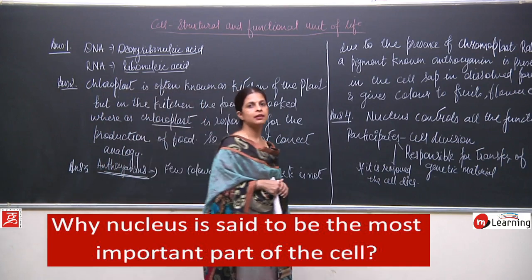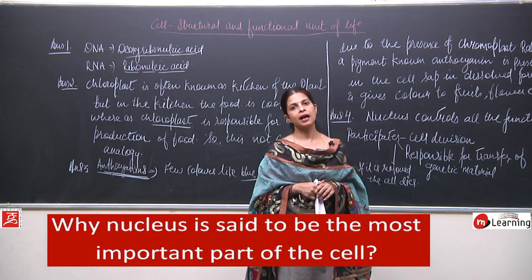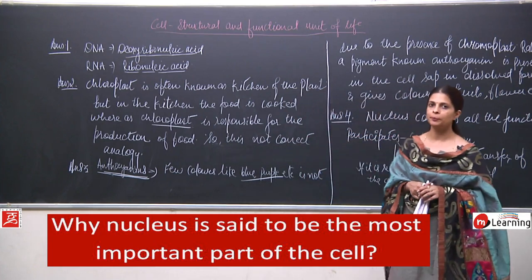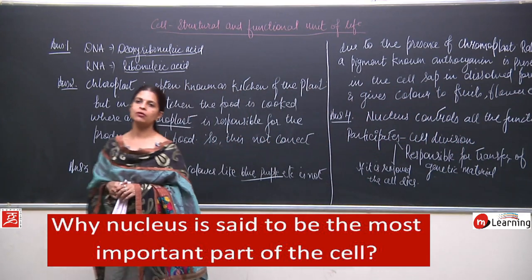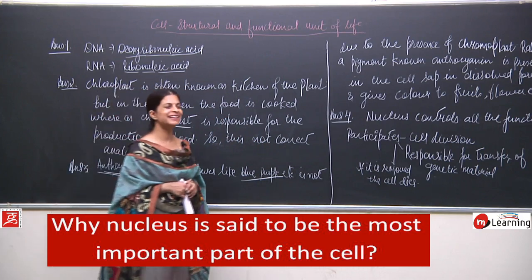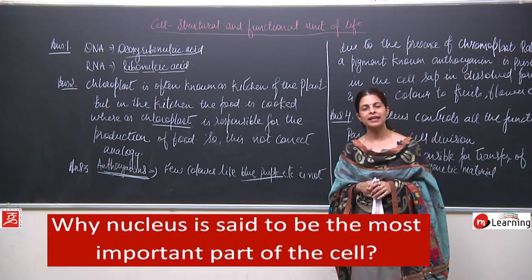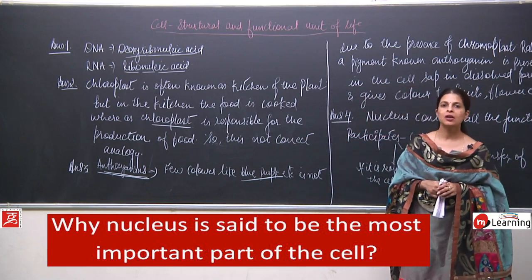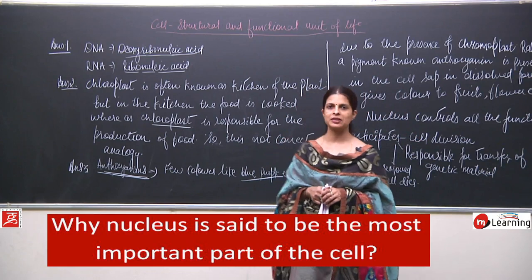When we talk about the longest cell, it is the nerve cell — the neuron. The axon can be very long, so neurons come in the category of the longest cell. And when we talk about the largest cell, it is the egg of the ostrich. So to summarize: bacteria is the smallest, ostrich egg is the largest, and neurons are the longest.